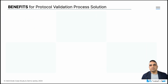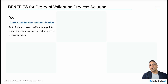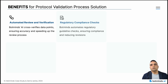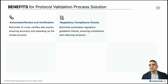To close this discussion, let me summarize the benefits Botmines platform offers for the protocol validation process. Automated review and verification: our solution leverages advanced AI to cross-verify data points within protocols, ensuring accuracy and completeness while significantly speeding up the review process. By automating these checks, we reduce the time and effort typically required for manual review. Regulatory compliance checks: Botmines automates the extraction and checking of regulatory guidelines, ensuring protocols meet all necessary compliance standards and reducing the number of revision cycles. Automating these compliance checks not only saves time but also ensures accuracy and consistency.